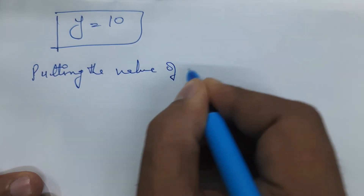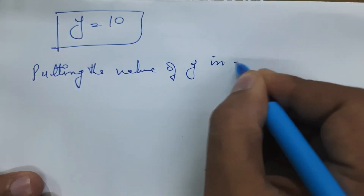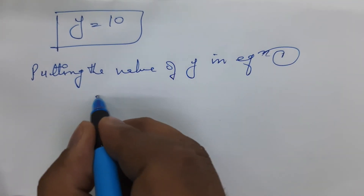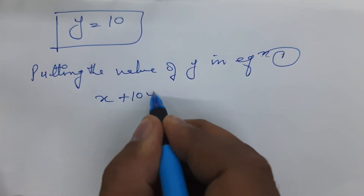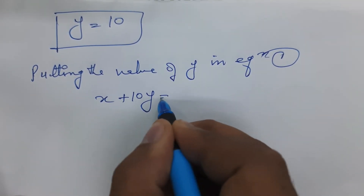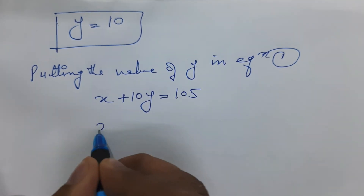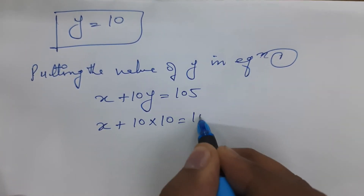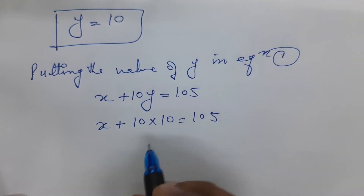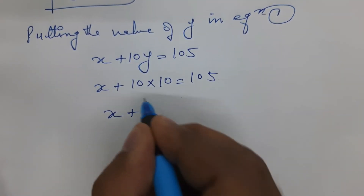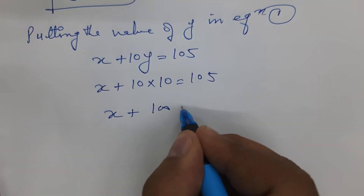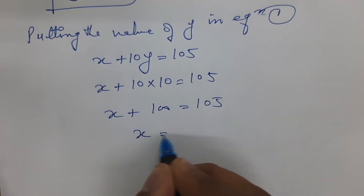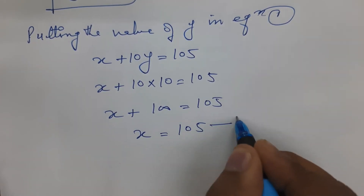Putting the value of y into equation one: the first equation is x plus 10y equals 105. So x plus 10 into 10 equals 105, which gives x equals 105 minus 100.